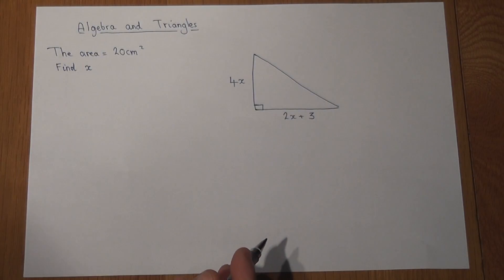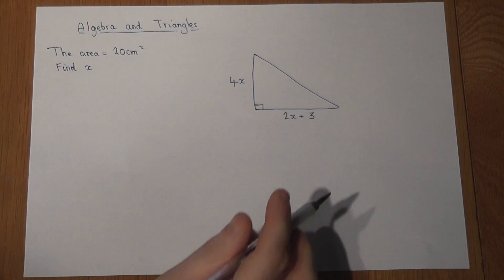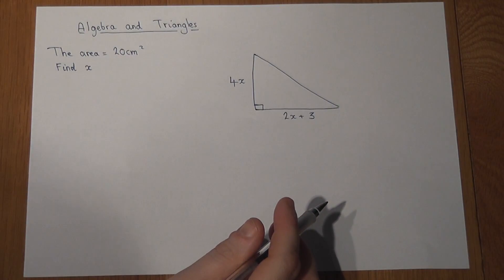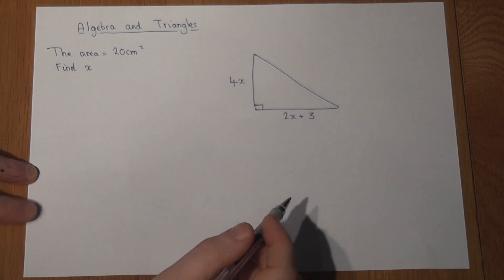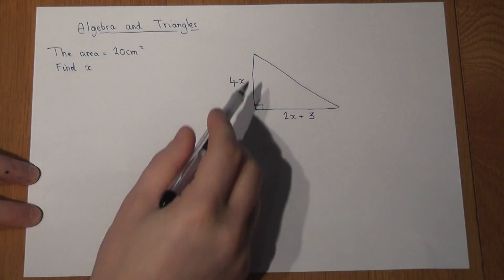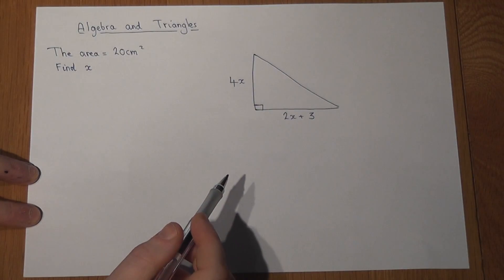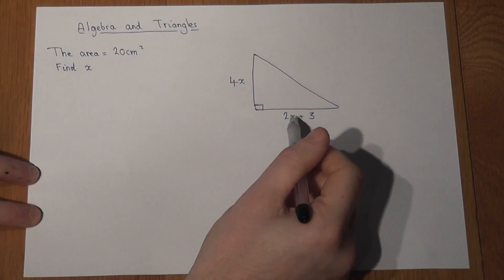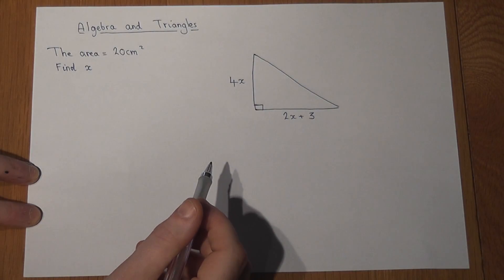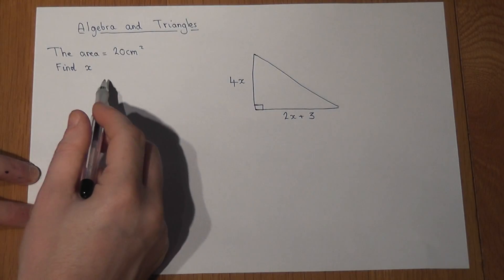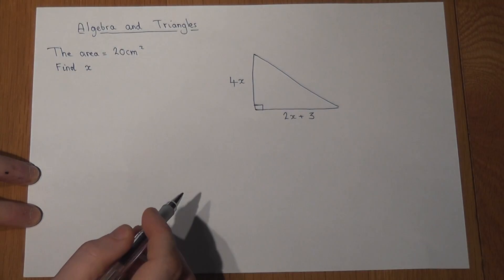This question reviews some algebra and shape and space problem-solving. We're given a right-angled triangle with dimensions 4x and 2x plus 3, and we're asked to find x if the area is 20.